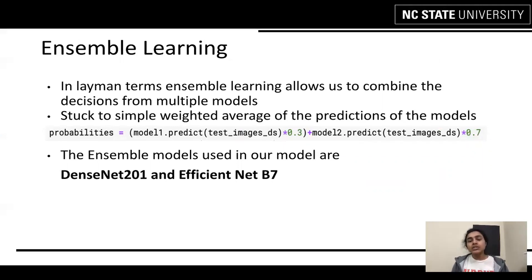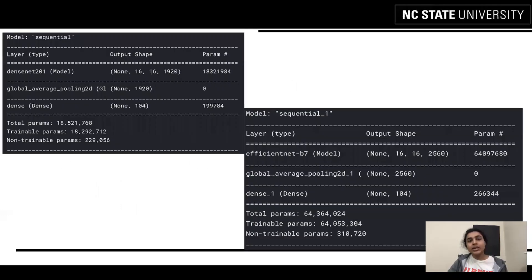The ensemble models that we used in our case are DenseNet-201 and EfficientNet-B7. We used both models, generated their predictions, and automated some of their predictions to get our final prediction values.